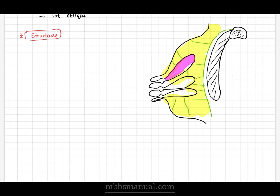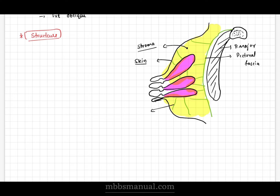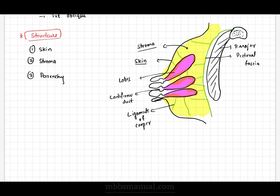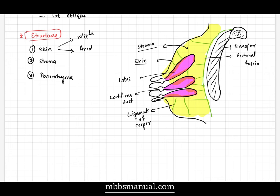Under skin, we will be discussing the nipple and areola. The nipple is a conical projection below the center of the breast, usually at the level of the fourth intercostal space. The areola is a circular area of pigmented skin surrounding the base of the nipple. It contains a large number of modified sebaceous glands, particularly at its outer margin.